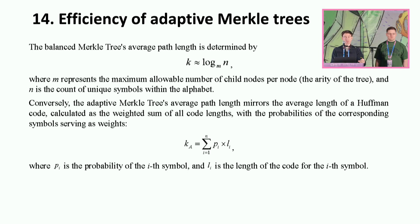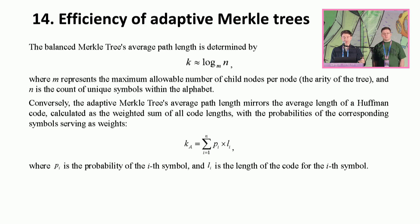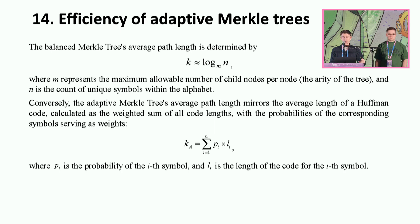Comparing the efficiency of adaptive Merkle trees to balanced trees: the average path length in balanced trees is determined by log m of n, where m represents the maximum allowable number of child nodes per node (the arity of the tree), and n is the count of unique symbols within the alphabet. For the adaptive tree, the average path length mirrors the average length of Huffman encoding, calculated as the weighted sum of all code lengths — sigma of pi times li — where pi is the probability of the i-th symbol and li is the length of the code for the i-th symbol.